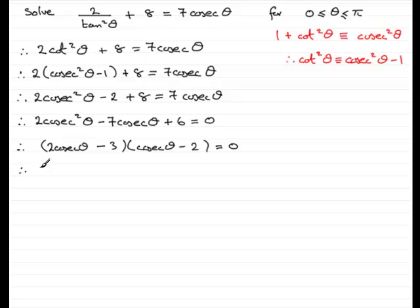Now that it's factorized, I can say that each of those factors equals 0. So we've got the first factor equaling 0, or this second factor equals 0. Cosec theta minus 2 equals 0. And if I rearrange this for cosec theta by adding 3 to both sides and dividing by 2, I get cosec theta equals 3 over 2. And for this one, if I add 2 to both sides, I get cosec theta equals 2.